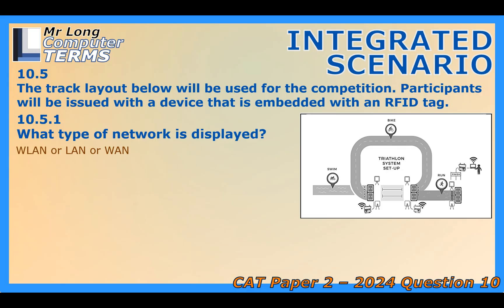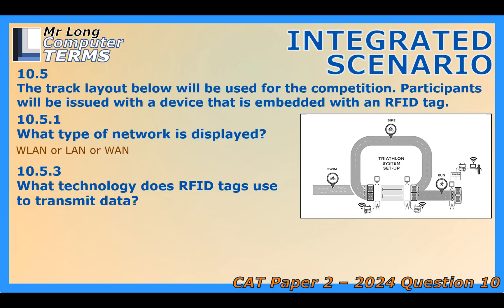Those RFID tags — radio frequency identification — how are they sending their info to the readers at checkpoints? They use radio waves. These tags have a tiny chip and antenna. They can be passive, meaning they get power from the reader's signal when they get close, or active, with a small battery. When the tag passes near a reader antenna, the reader sends out a signal, and the tag responds by transmitting its unique ID number using radio frequency signals. This happens pretty much instantaneously.